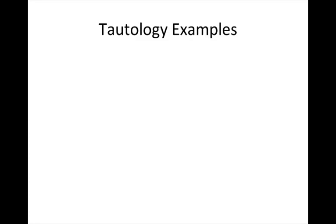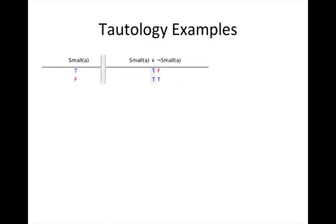Let's look at some examples. You have an example using the blocks language from Tarski's World, but because the sentence is governed by connectives, the blocks language sentences are not at issue. We have the sentence 'A is small or not small,' and the column under the main connective — in this case the disjunction — shows that the values are always true. We have two rows of the truth table because we have a single atomic sentence.